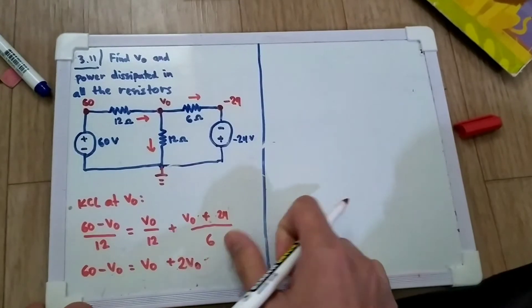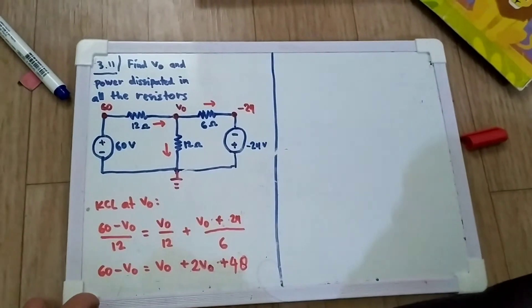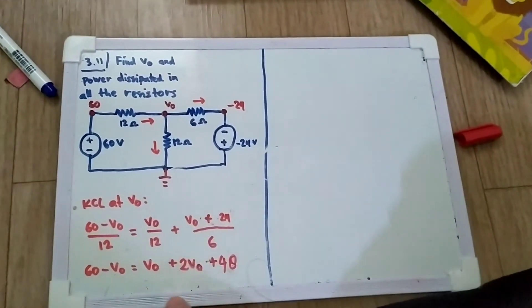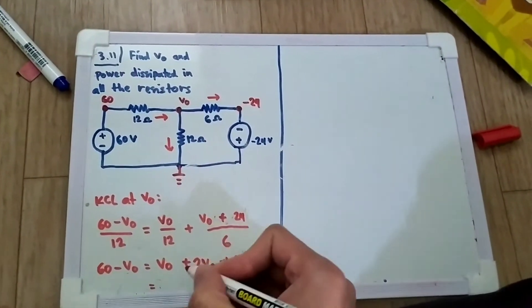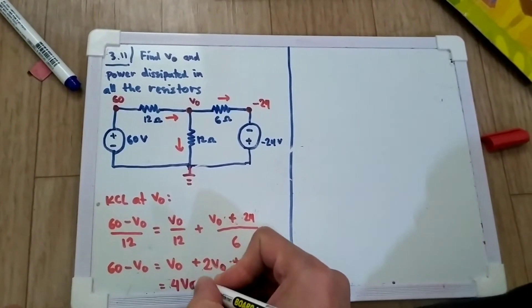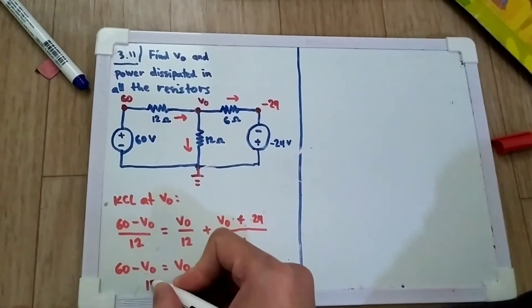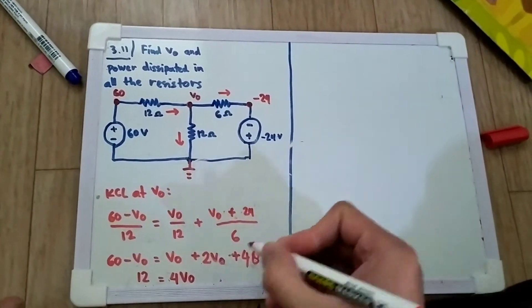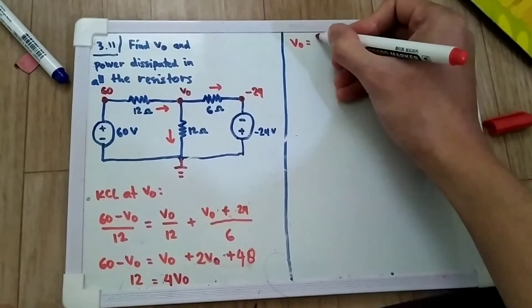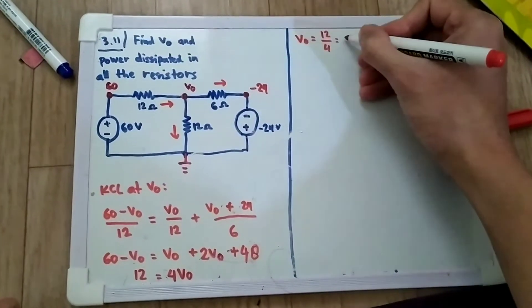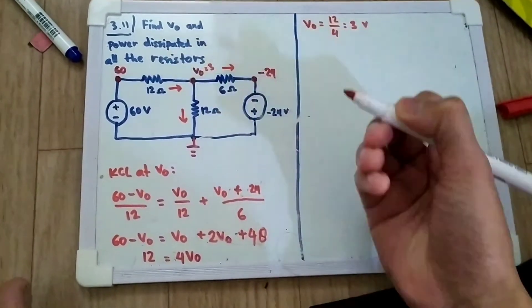That gives us 48 on the right side. Combining terms: 60 minus 48 equals 12, and the V0 terms give us 4V0. So we have 4V0 equals 12, therefore V0 equals 12 divided by 4, which is 3V.